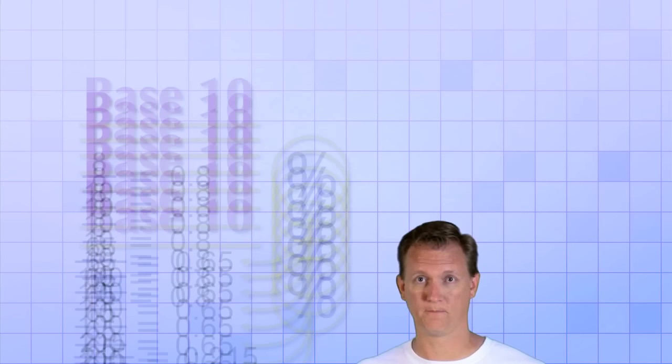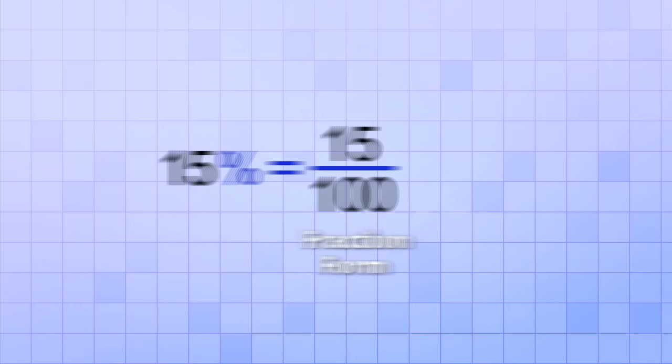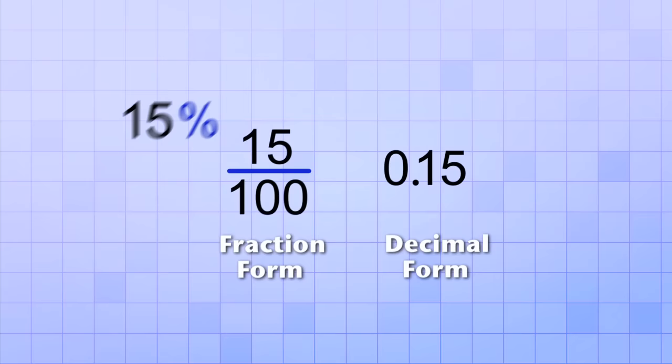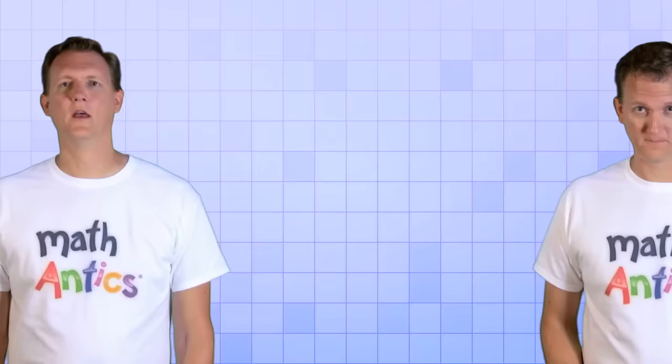They're hundredths because their bottom number is always 100. That means it's really easy to rewrite a percentage as a decimal number. You can do it the same way as we did in the base 10 fractions video. For example, we know that 15% is just 15 over 100, right? That's its fraction form. But it also has the decimal form, 0.15, because this is the hundredths place, and 0.15 means 15 hundredths. So we can rewrite 15% as a fraction or as a decimal. And now that you know why we can easily convert a percentage to a decimal, let me show you a really simple trick for doing it.